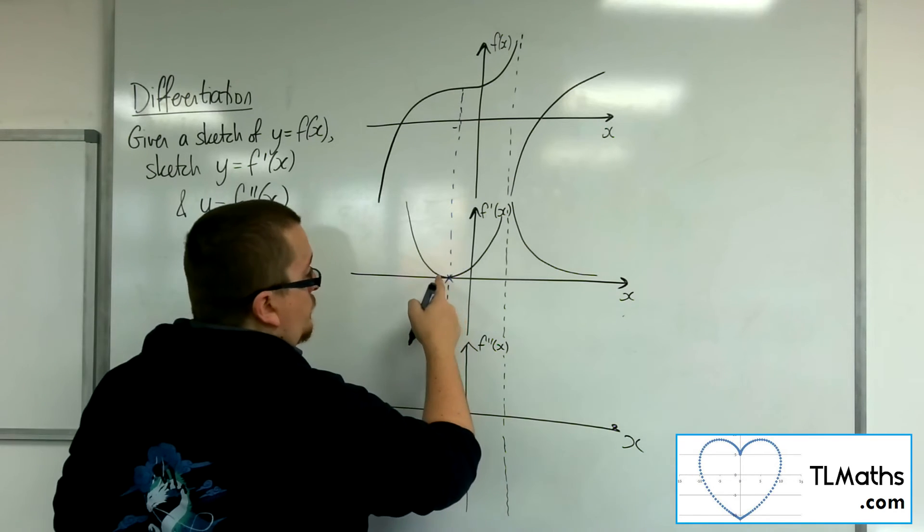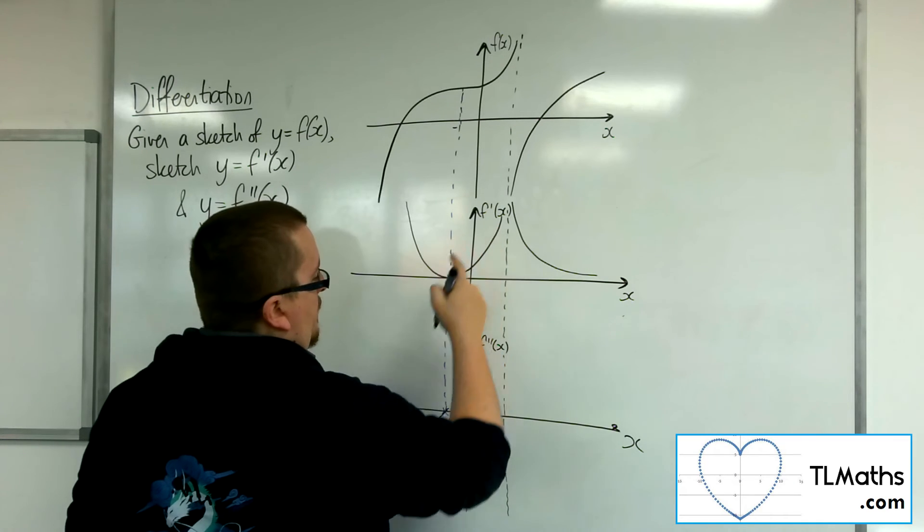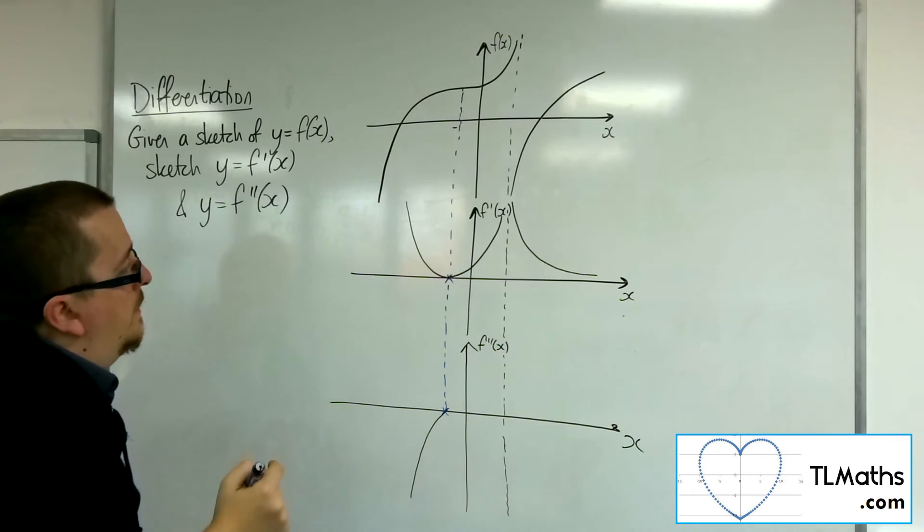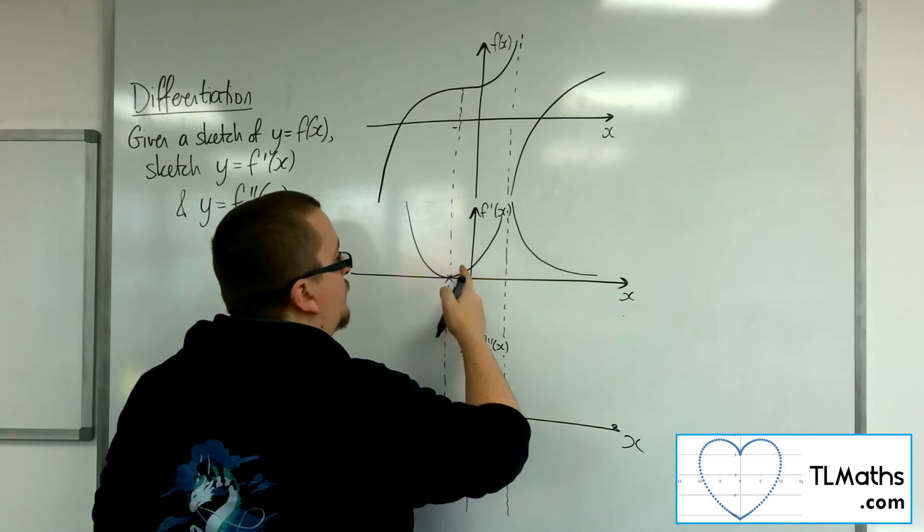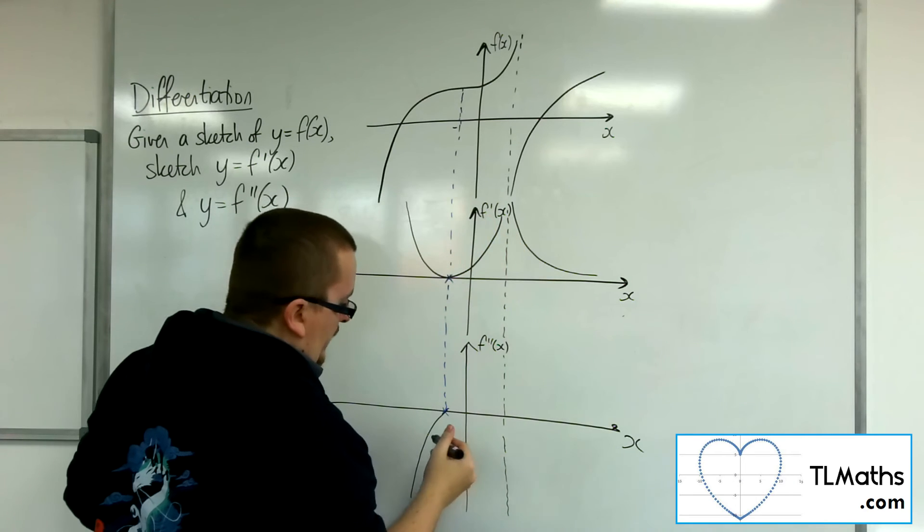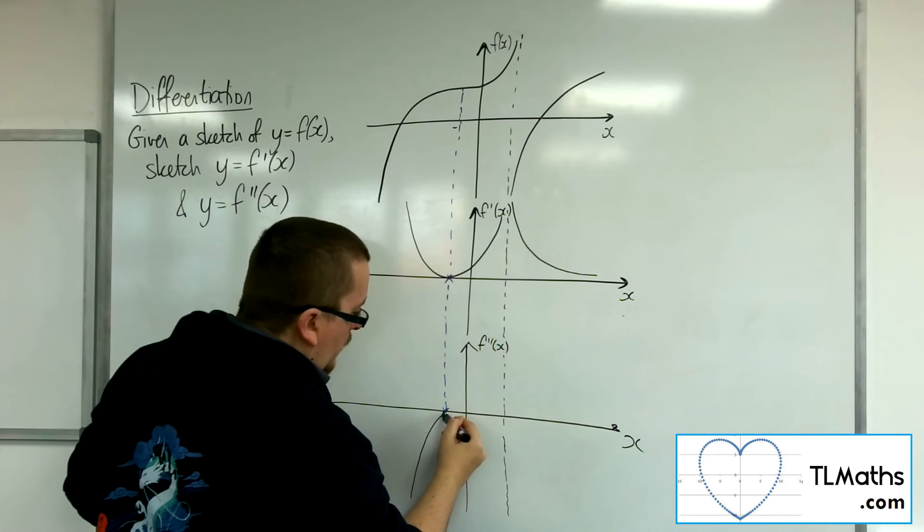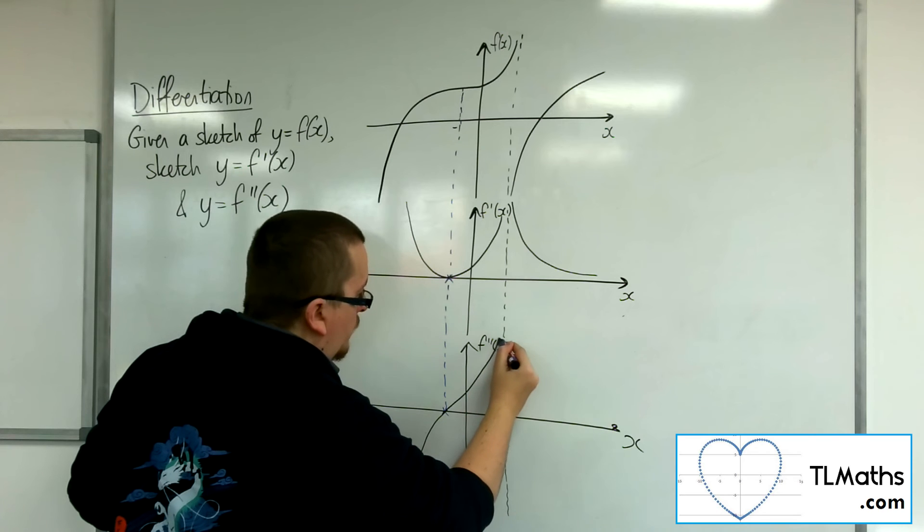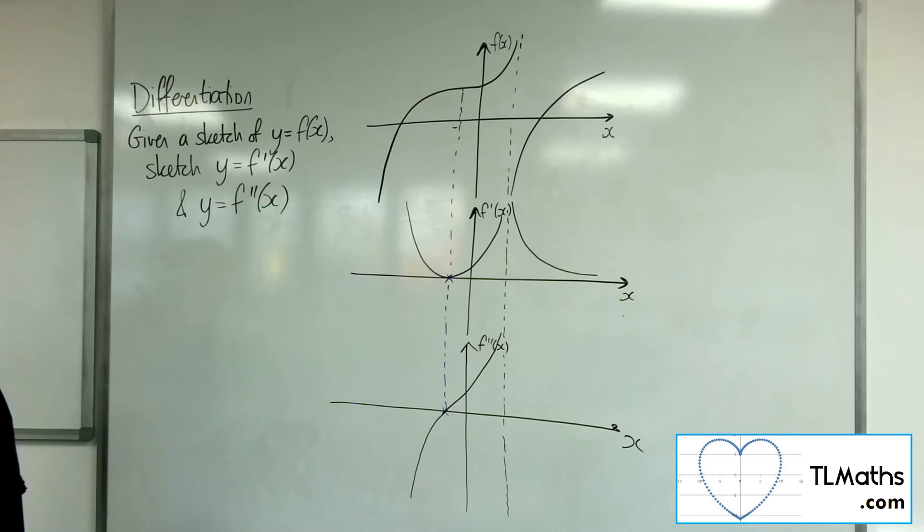Then we're going to do positive gradient and tending towards that asymptote. So it probably looks something like that. So that's what our curve would look like.